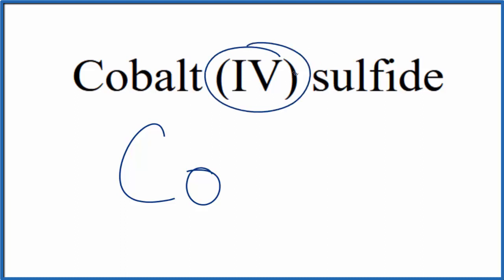In this 4, this Roman numeral 4 in parentheses, that means that cobalt is 4+. Sulfide, that's from sulfur, so we just write S. And sulfur, it forms ions that are 2-. The sulfide ion is 2-.